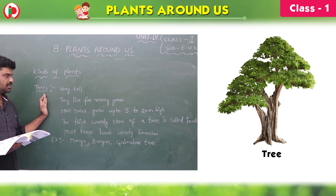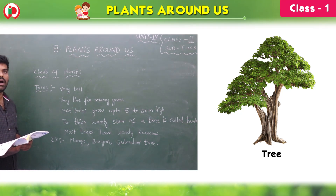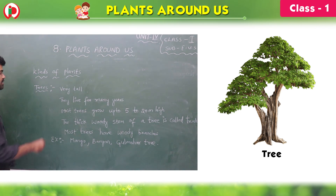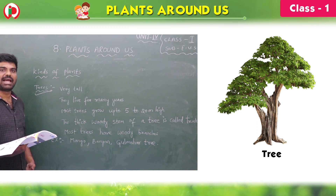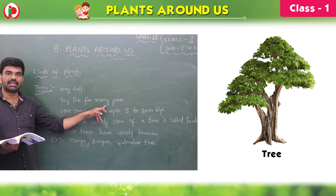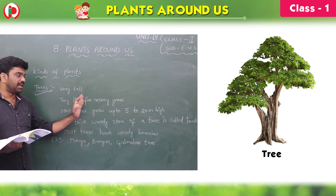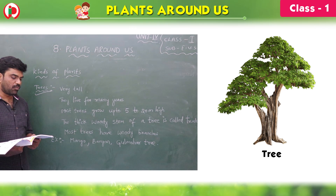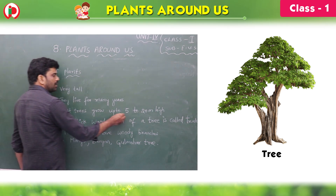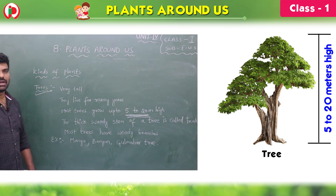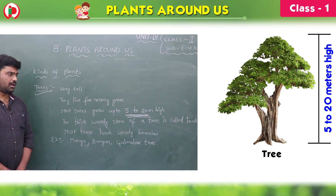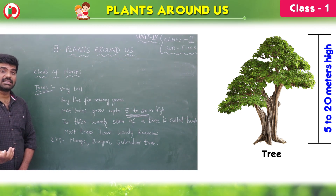What is the first one? Trees. Some plants grow very tall, and very tall plants are called trees. Trees are very big plants. They live for many years. Most trees grow up to 5 to 20 meters high.